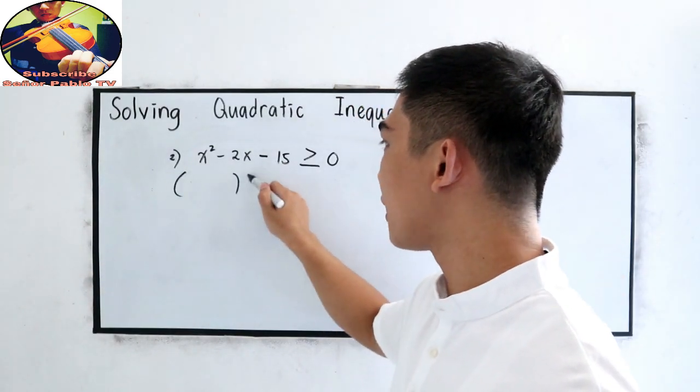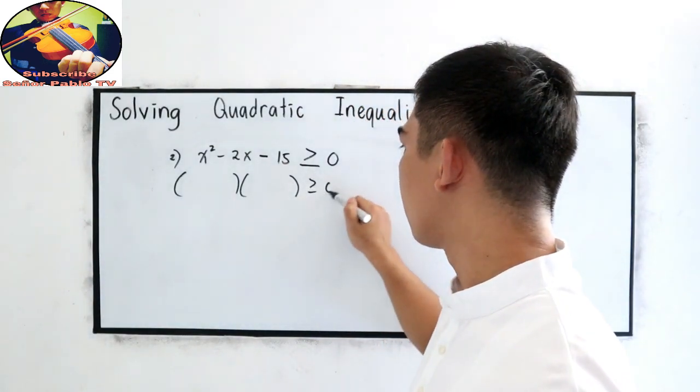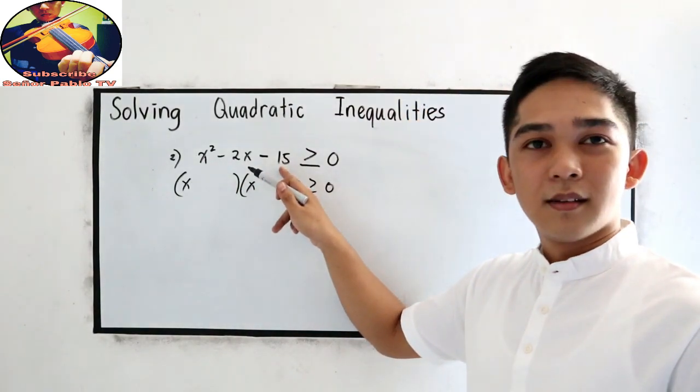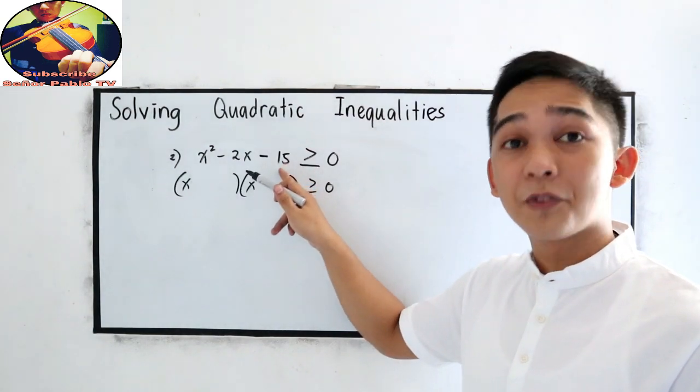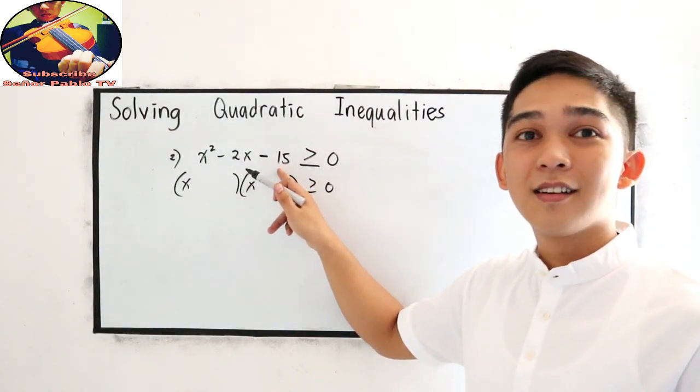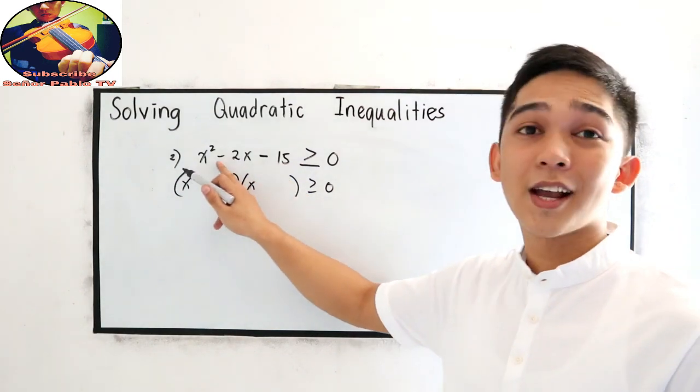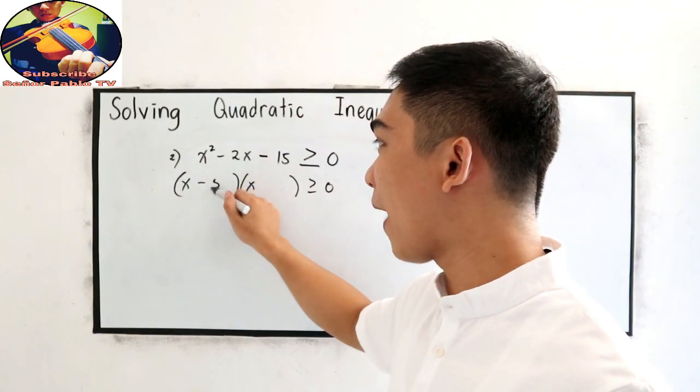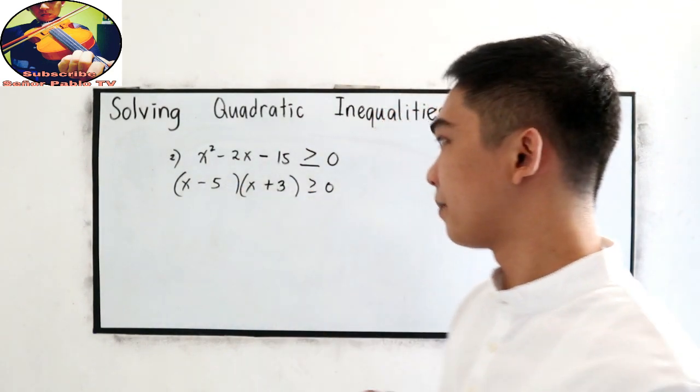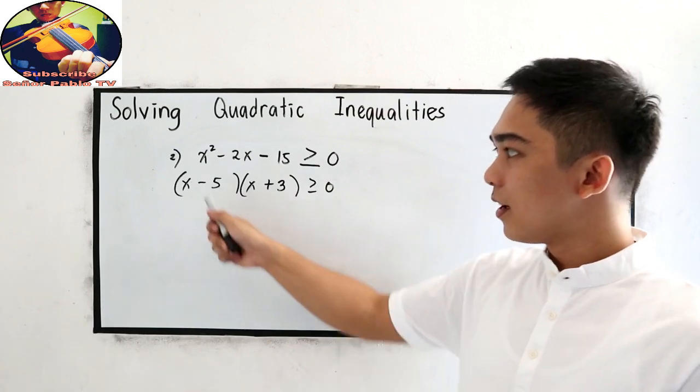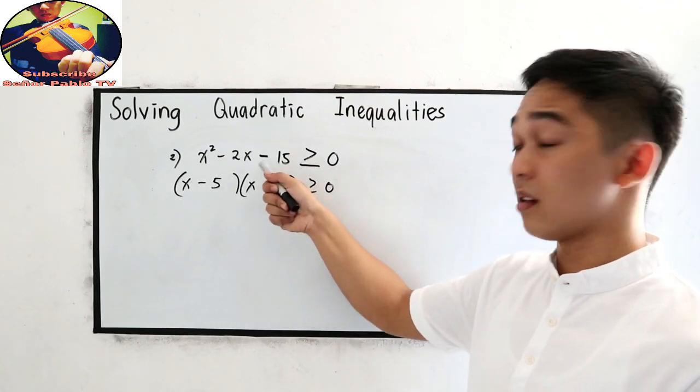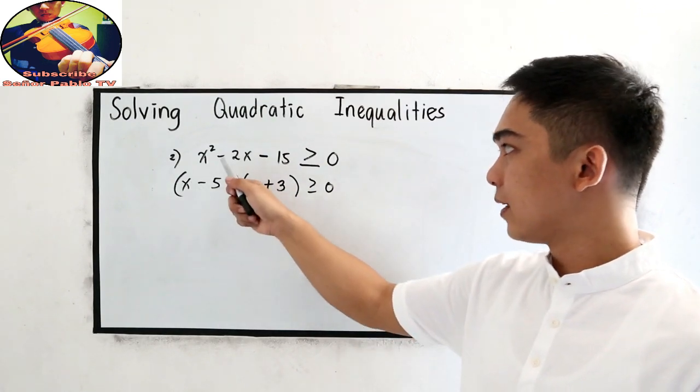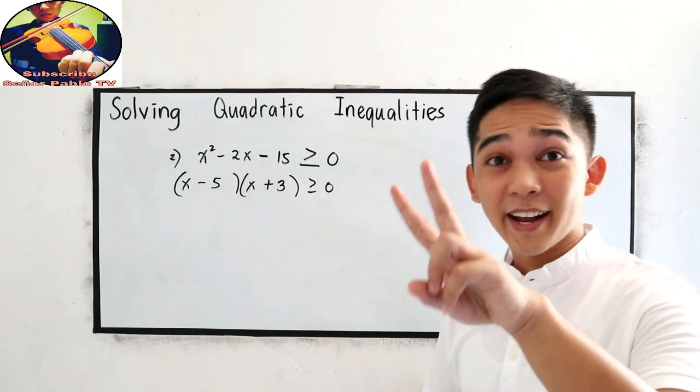So our factors are factors of negative 15, wherein the sum is negative 2. So that is negative 5 and positive 3. Negative 5 times positive 3, that is negative 15. Negative 5 plus positive 3, that is negative 2.